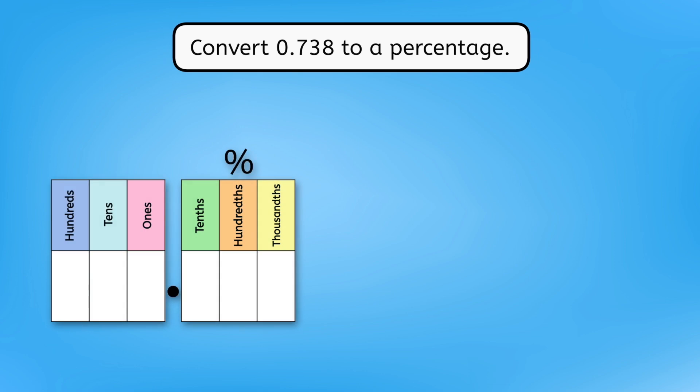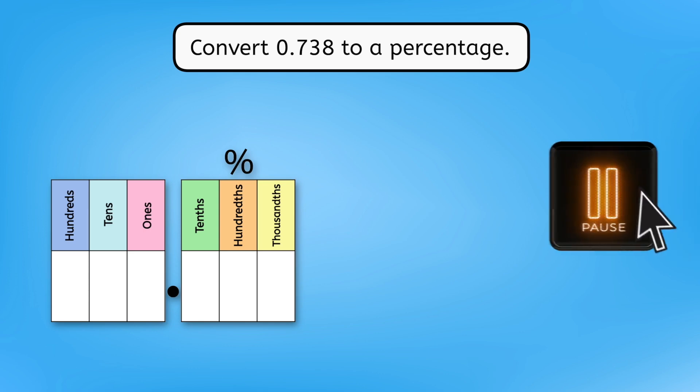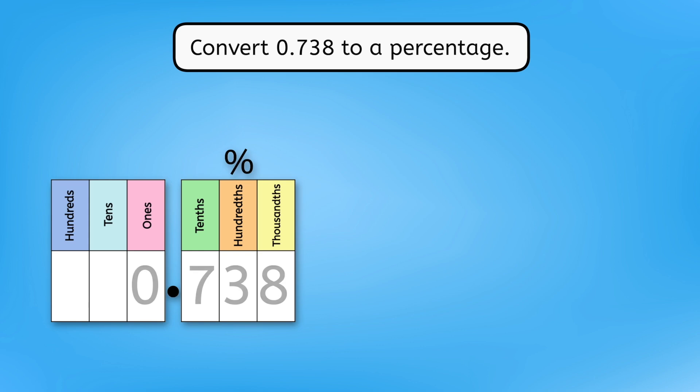Here's one more to try out. Using the place value chart, convert seven hundred thirty-eight thousandths to a percentage. Percents mean out of one hundred, but these digits go all the way to the thousandths place. What should we do? Well, we can think about this as seventy-three hundredths plus some extra. So we can write this decimal as the percentage, seventy-three point eight percent.